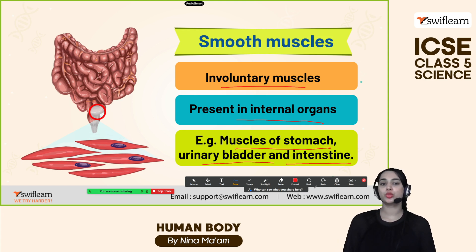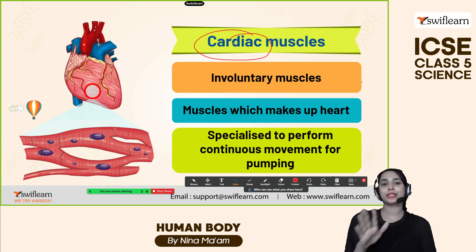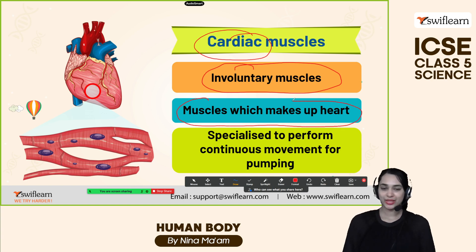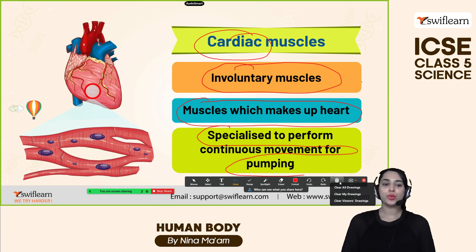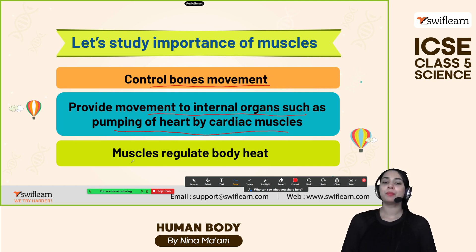Now let's learn about cardiac muscles. As the name suggests, cardiac means heart, so these are muscles related to the heart. They are involuntary muscles that make up the heart, specialized to perform continuous movement for pumping. While pumping, the heart contracts, and the muscles help with blood pumping. The importance of muscles: they control bone movement, provide movement to internal organs such as pumping of the heart by cardiac muscles, and regulate body heat.